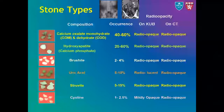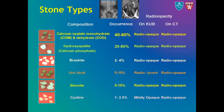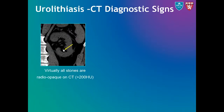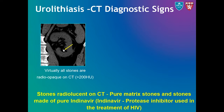While the majority of stones are radio-opaque on radiographs, uric acid stones are radiolucent and cystic stones are mildly radio-opaque. However, virtually all stones are radio-opaque on CT because they have a density of over 200 Hounsfield units. The stones which are radiolucent on CT include pure matrix stones and stones made up of pure indinavir, that is, protease inhibitor drugs used in the treatment of HIV. Administration of intravenous contrast and acquisition of delayed phase images might be needed for detection of these radiolucent stones on CT.